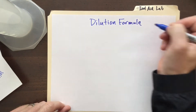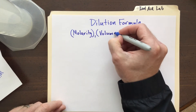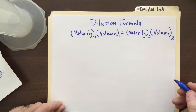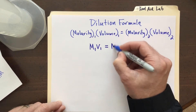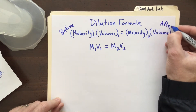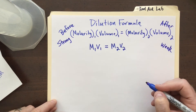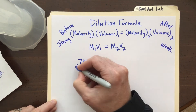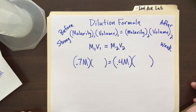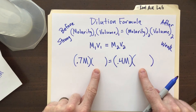I can just add water to dilute it, but I want to get it to the exact same molarity as the 0.4 molar solution. The dilution formula takes the molarity and volume of the original solution equal to the molarity and volume of the final solution — there's a before and after, a strong side and a weak side. I'll plug in 0.7 molar on the left and 0.4 molar on the right. We have two blank spots for volume and we're not sure what to put in there yet.